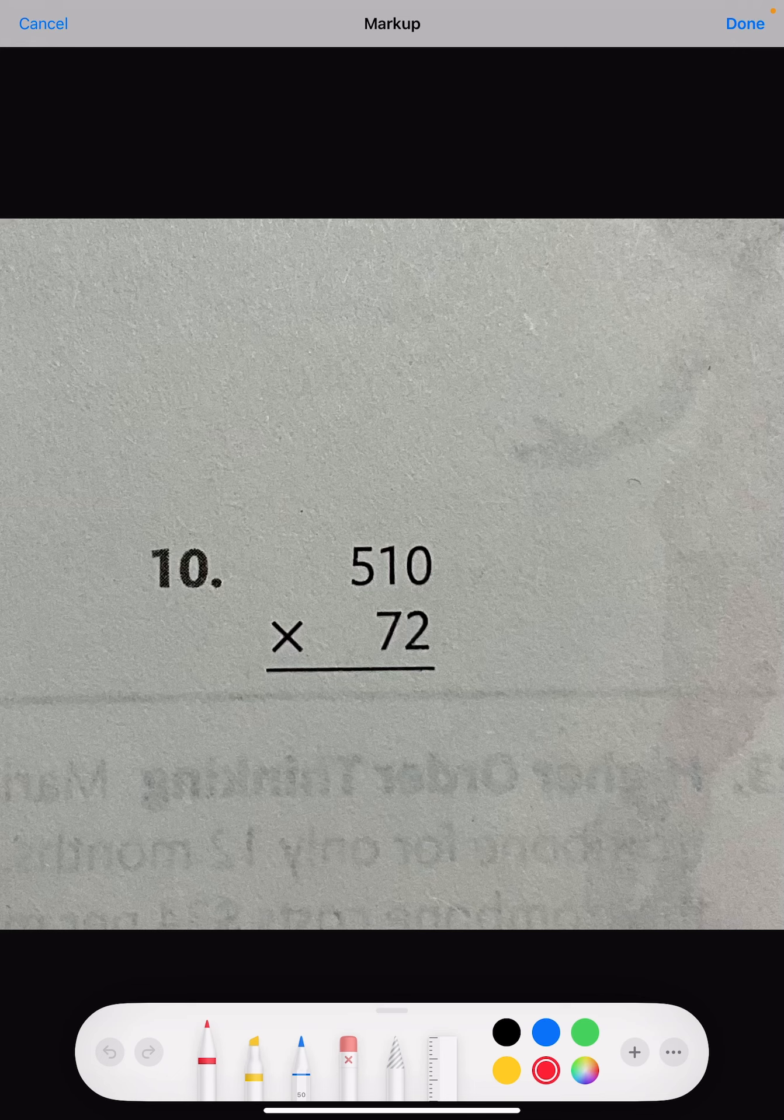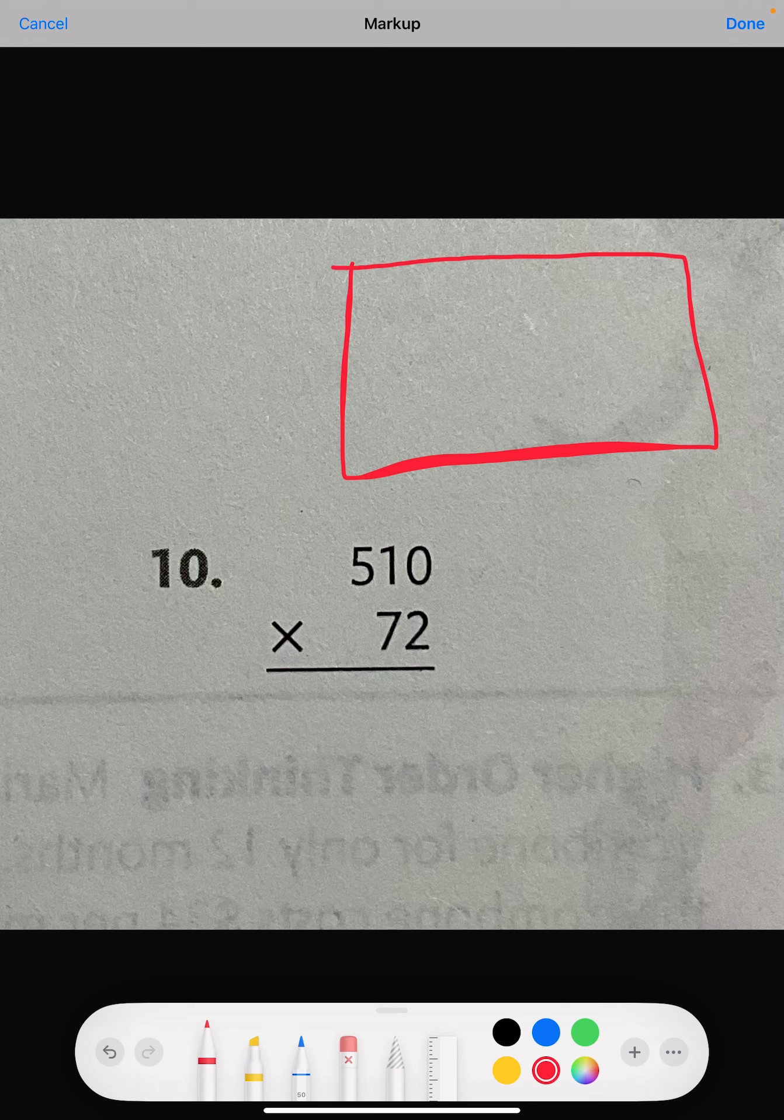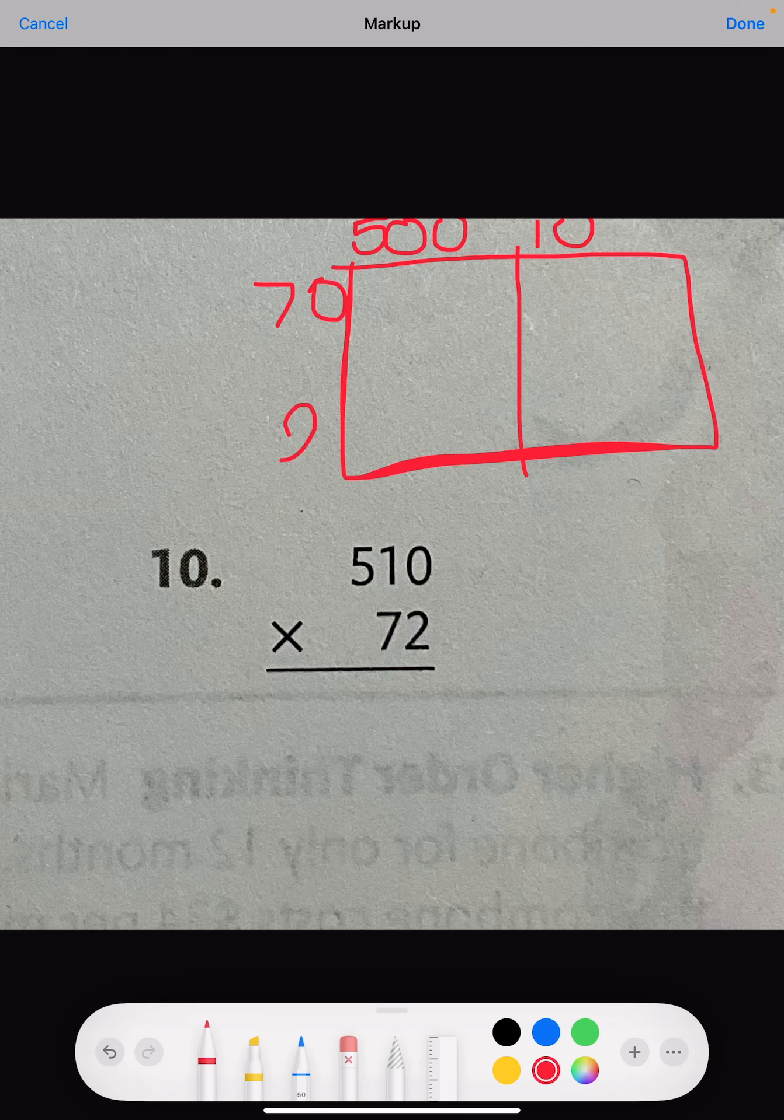To answer this, we're going to use our area model. This is what our new area model would look like. The top is going to have 500, then a spot for 10, and then it's going to have 70 and a spot for 2.